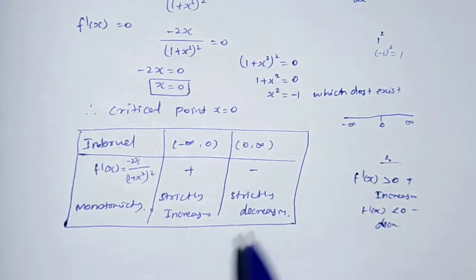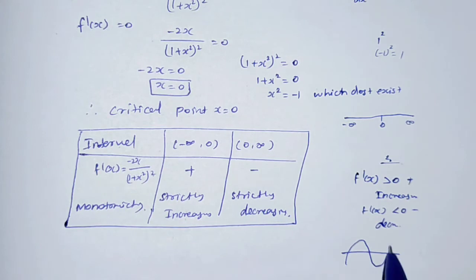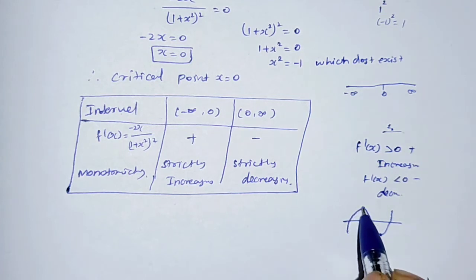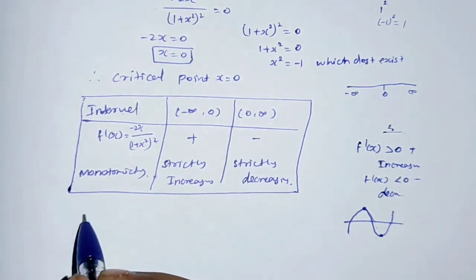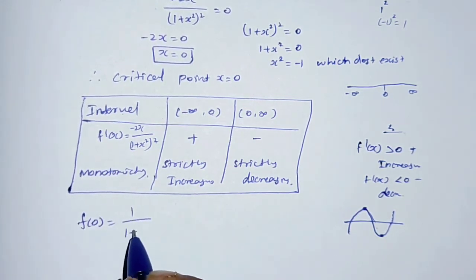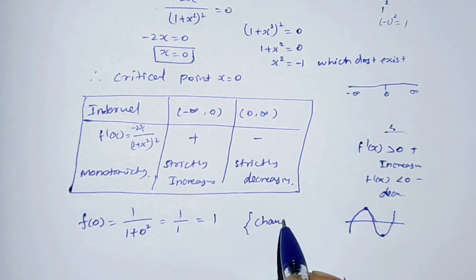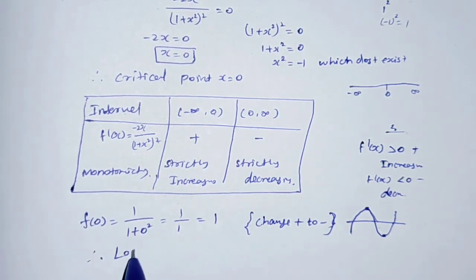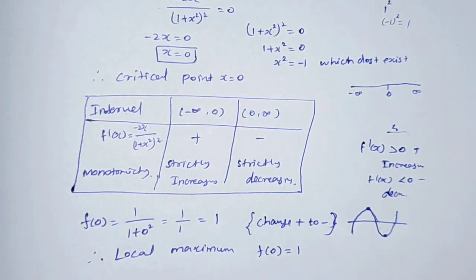For local extrema: since f'(x) changes from positive to negative at x = 0, there is a local maximum at x = 0. The local maximum value is f(0) = 1 divided by (1 + 0²) = 1. Therefore, the local maximum is f(0) = 1.